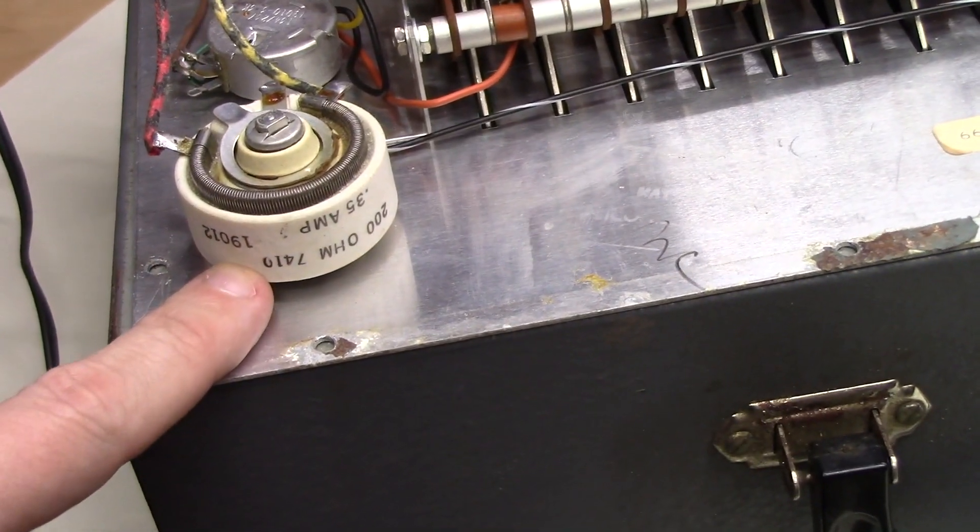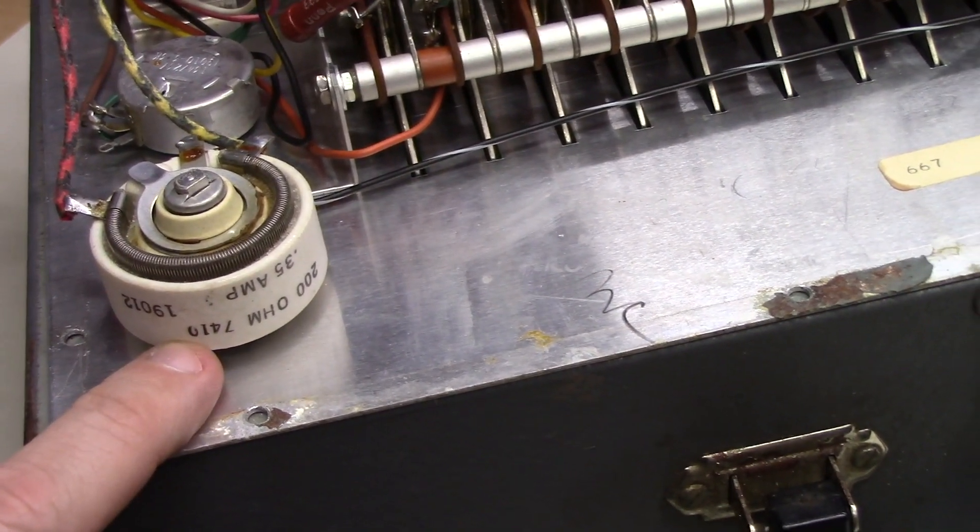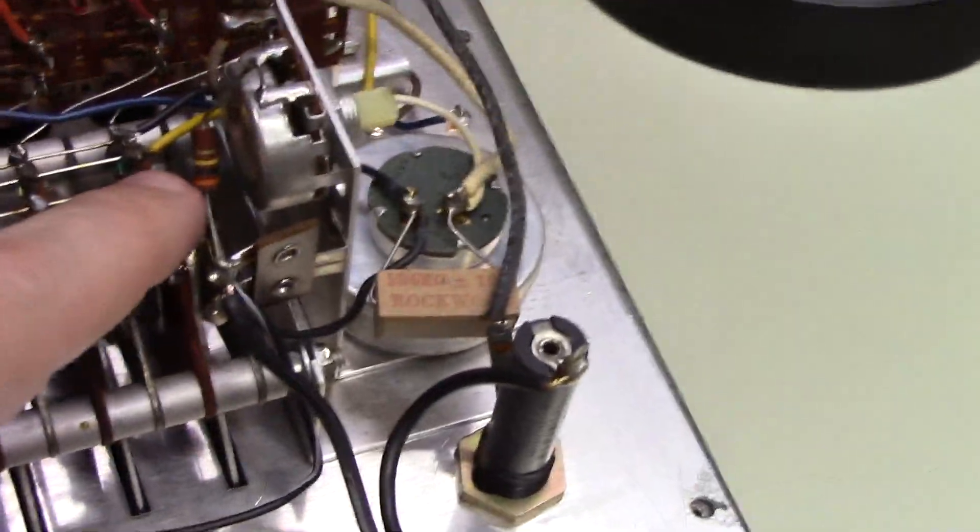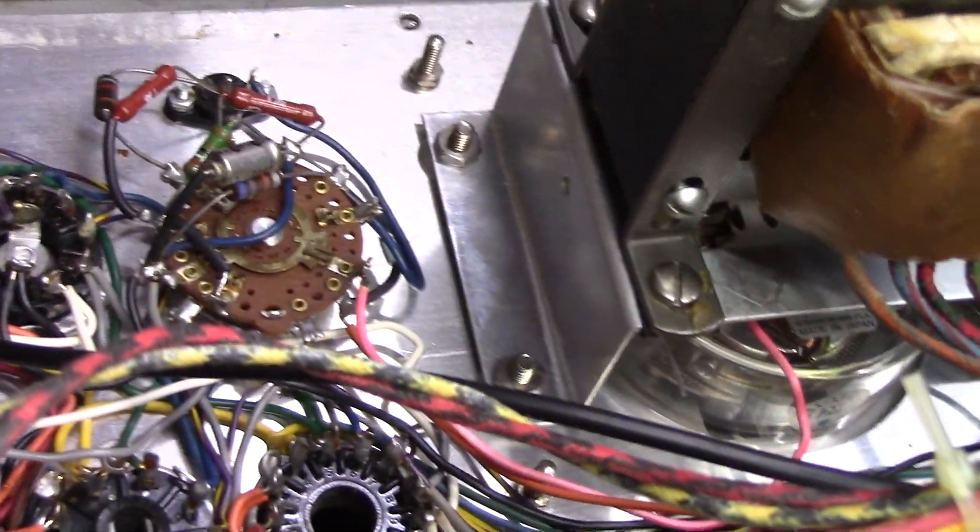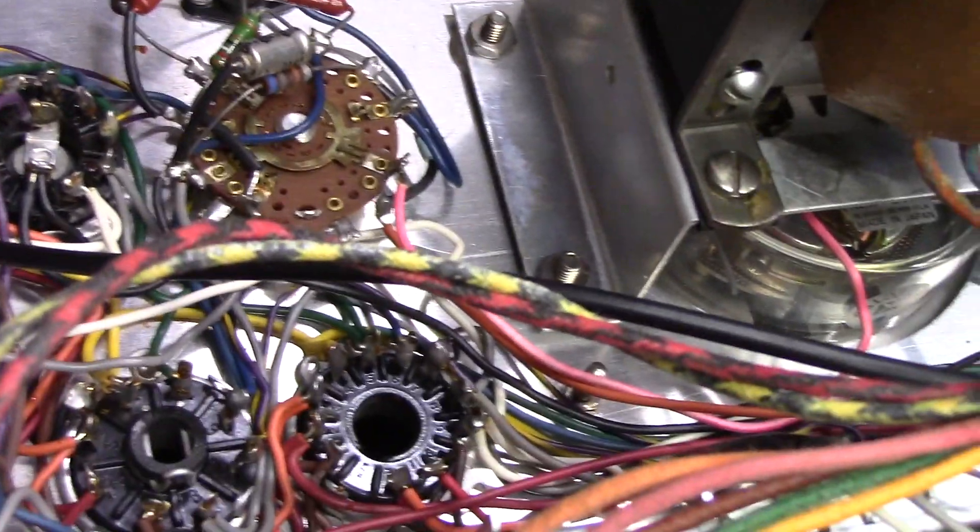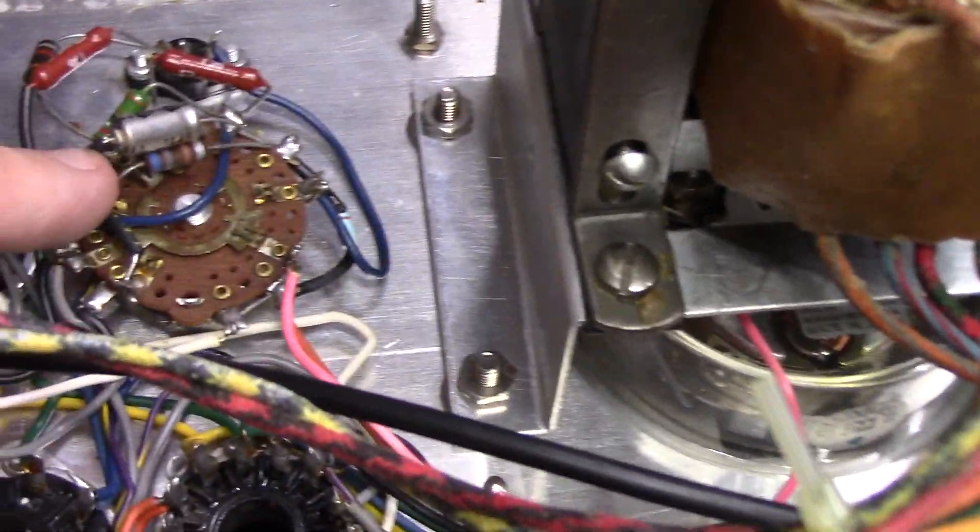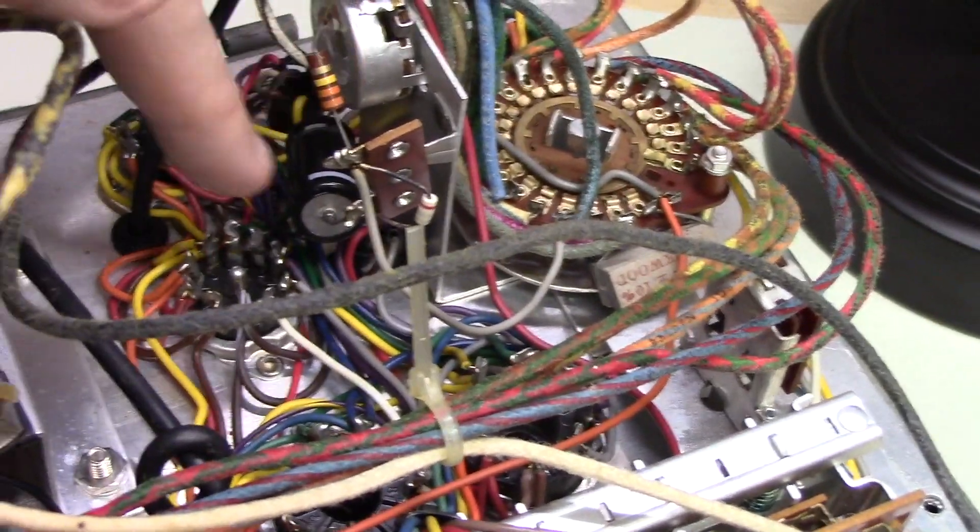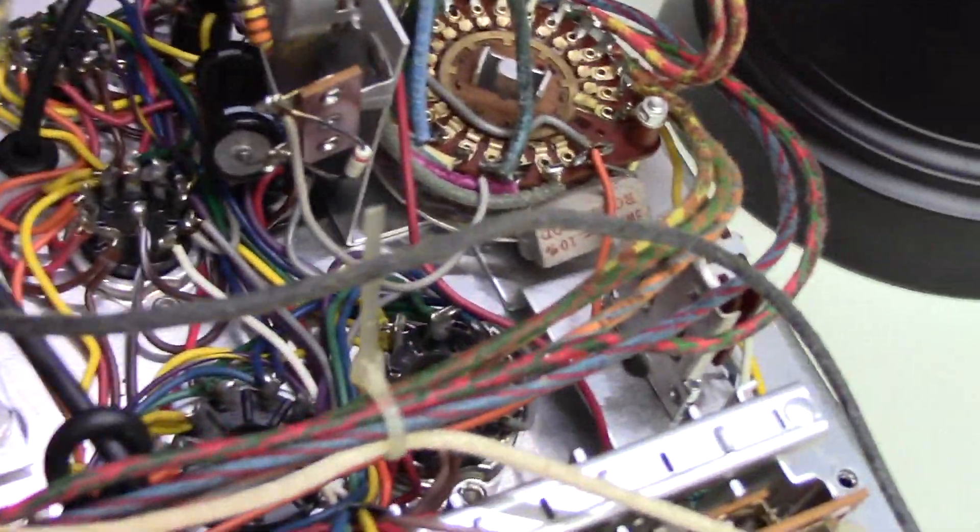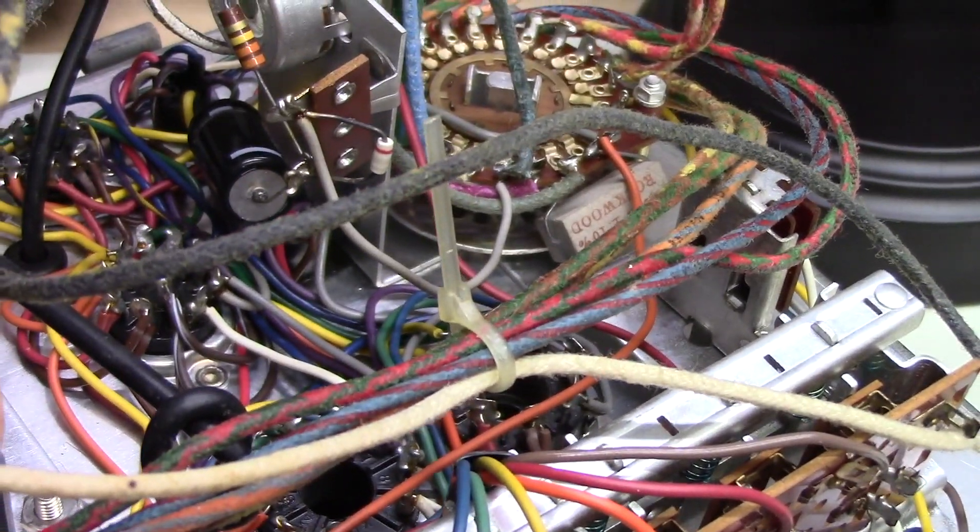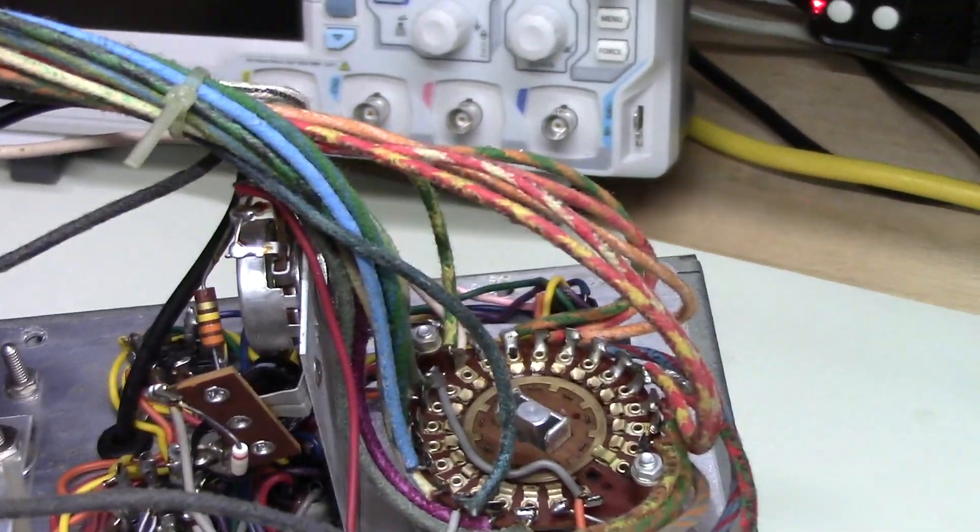Here is a 200 ohm third of an amp rheostat or wire wound potentiometer. We have carbon composition resistors in here along with wire wound. Here is one of two electrolytic capacitors, that one there, and there's one down here. I'm not seeing any obvious signs of anything hokey or obviously replaced in this unit.